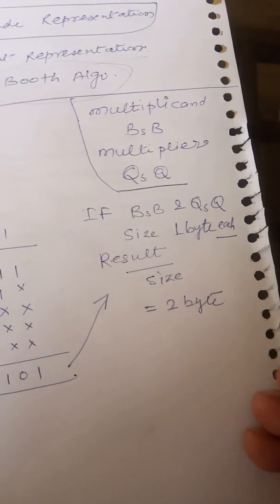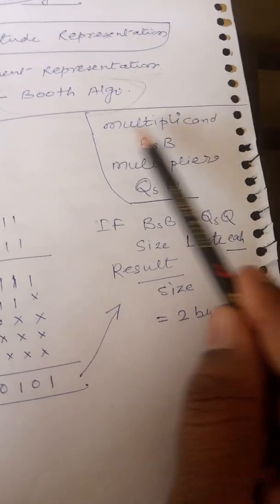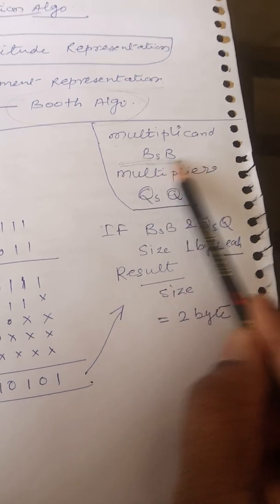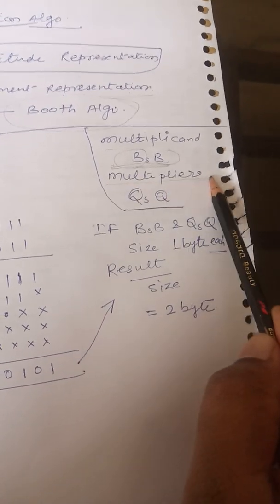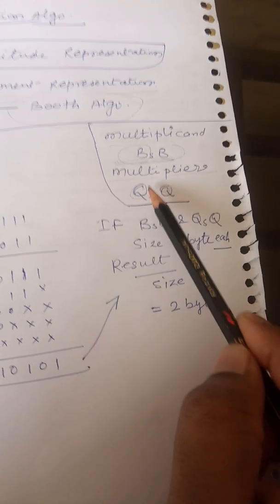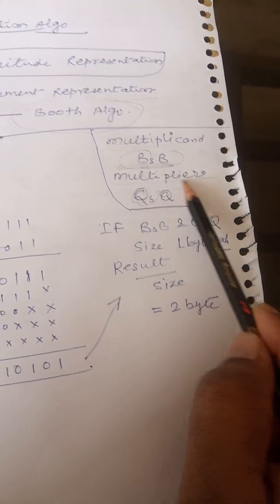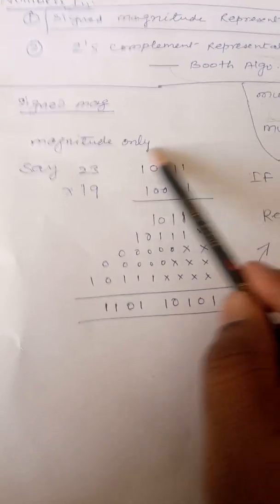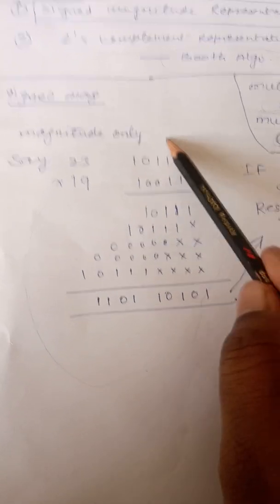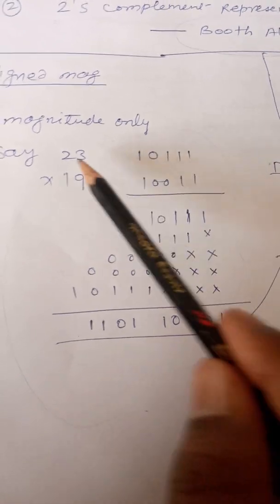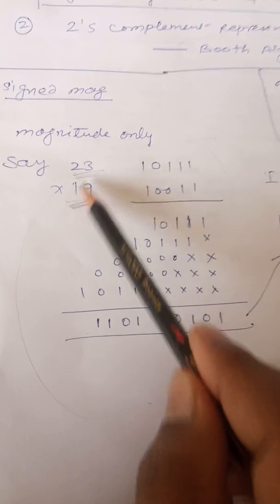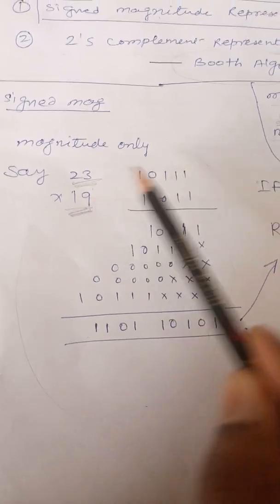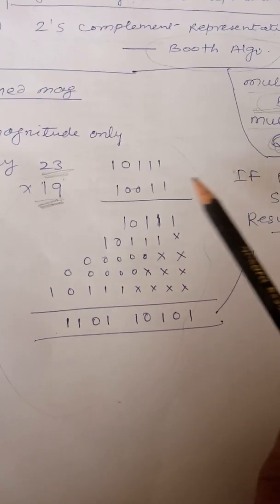So multiplicand is in BSB, that is BS is the sign bit and B is magnitude. Multiplier is in QSQ, QS is sign bit and Q is magnitude. So if we multiply the magnitude it is a normal course of mathematics multiplying. So say I want to multiply 23 by 19. So these are the magnitudes only. Sign is not here. Sign will be taken care of later on.